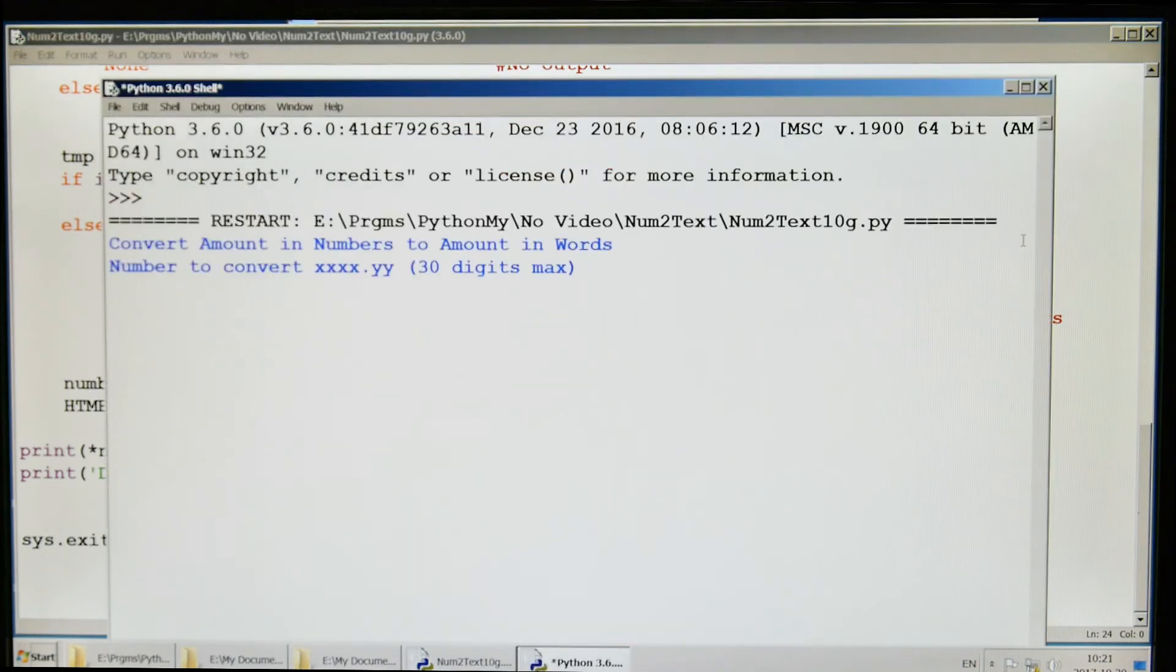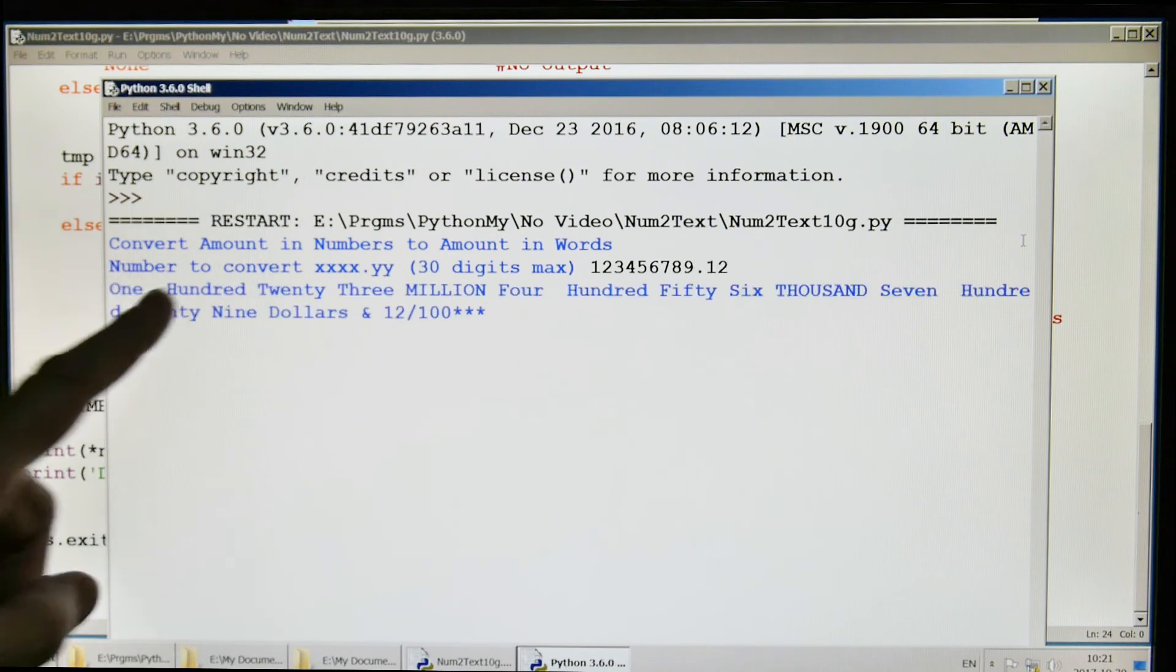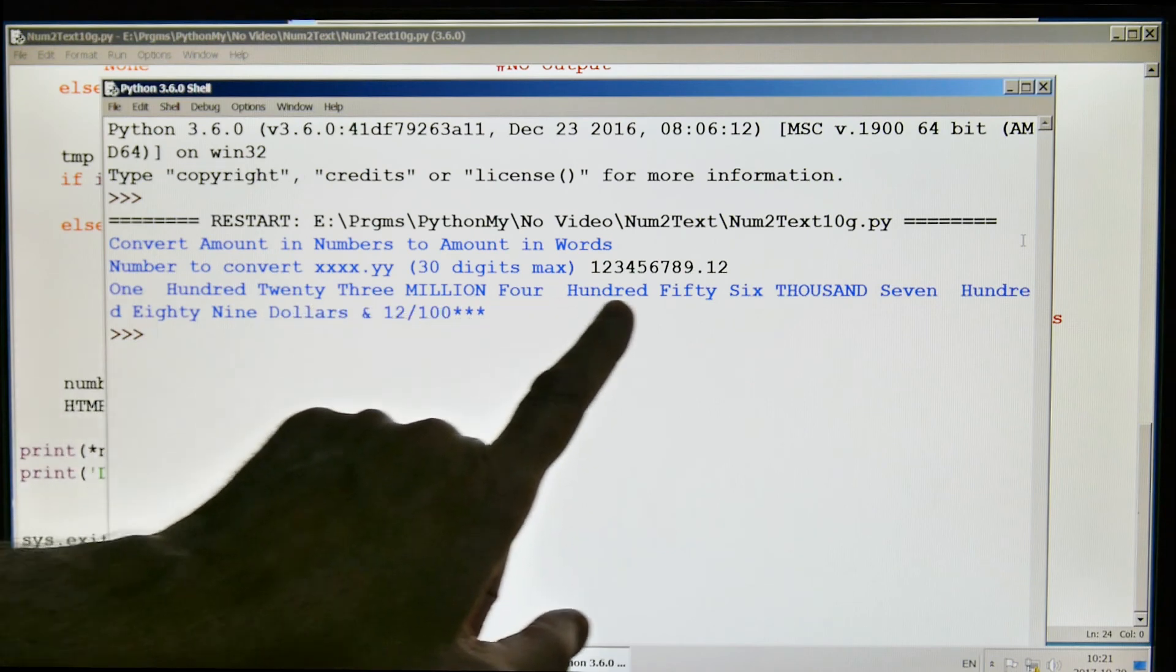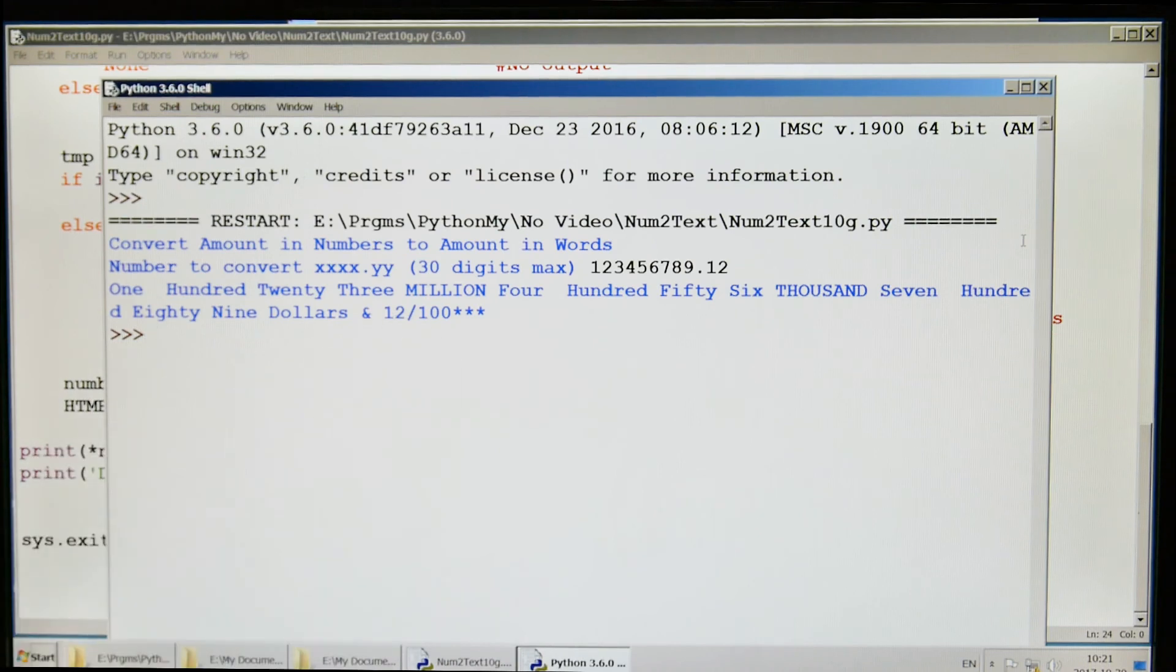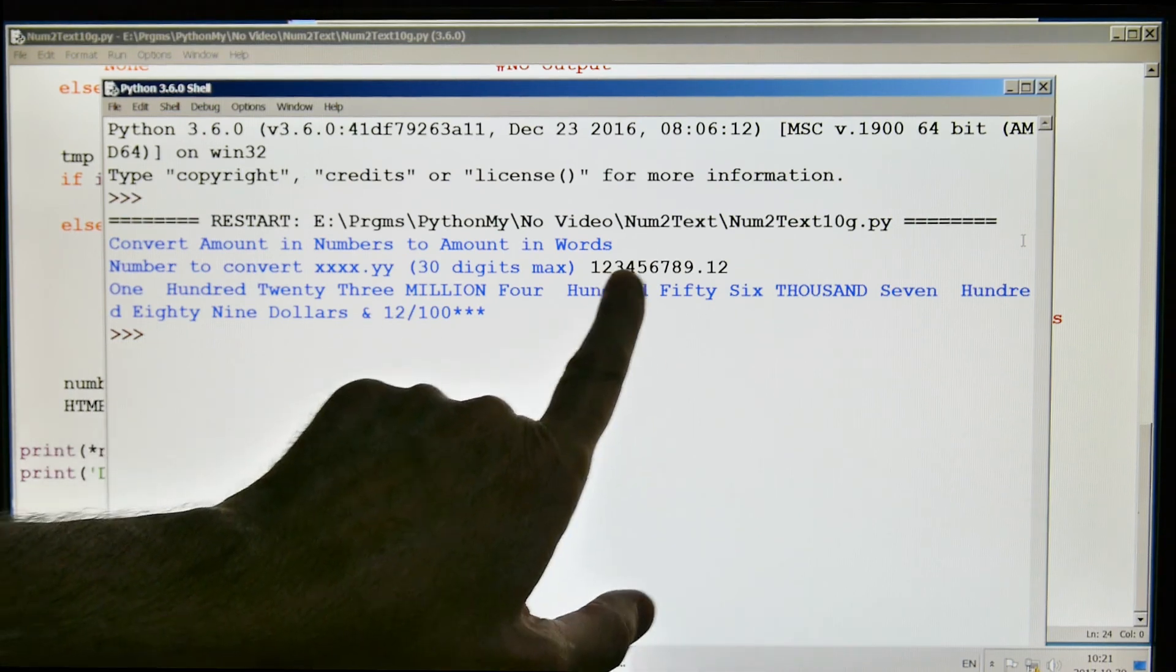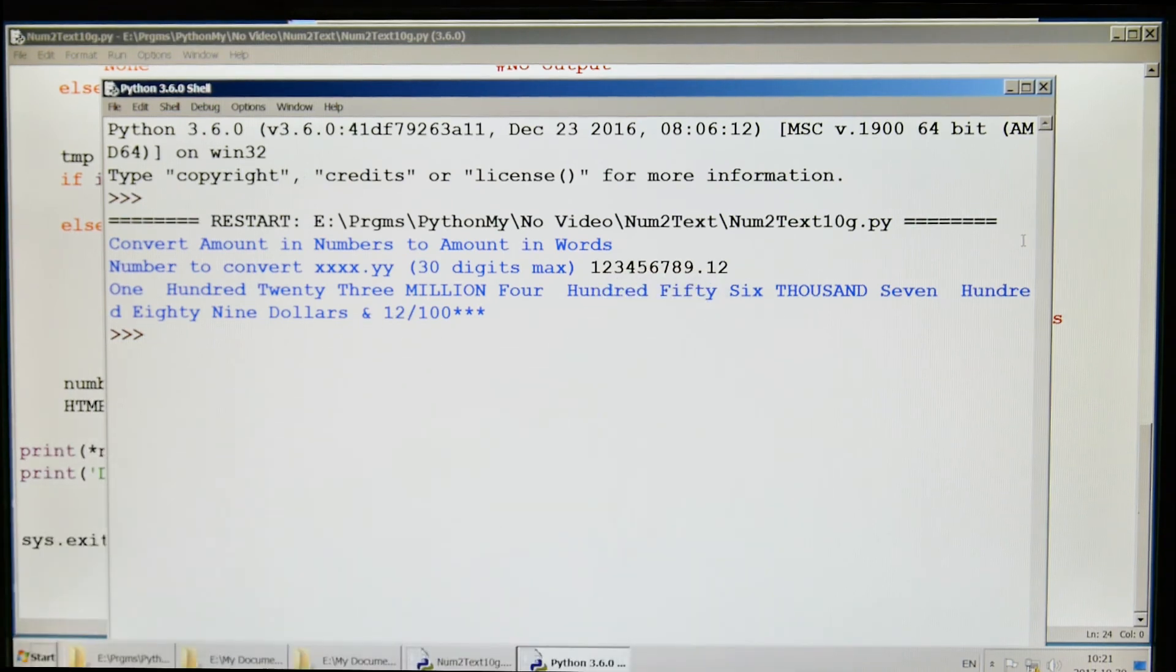Let's run it. I don't know, we can do 123456789.12. So: 123 million, 456 thousand, 789 dollars and 12 cents. And that should be correct if we look at that. Okay, well, that was it.